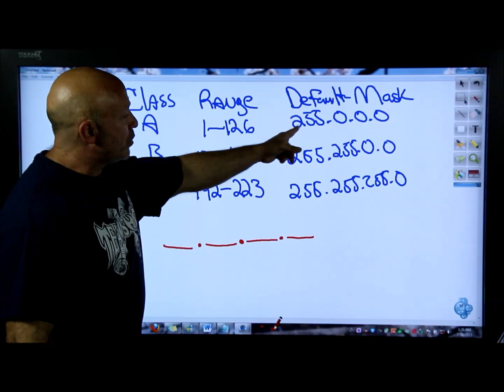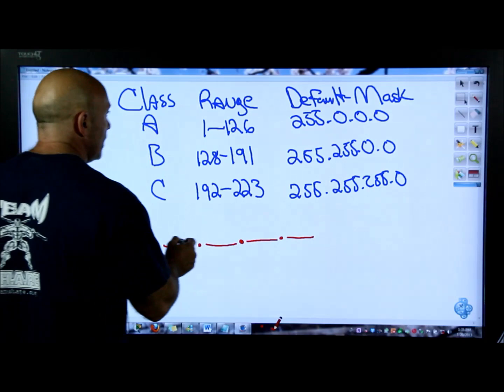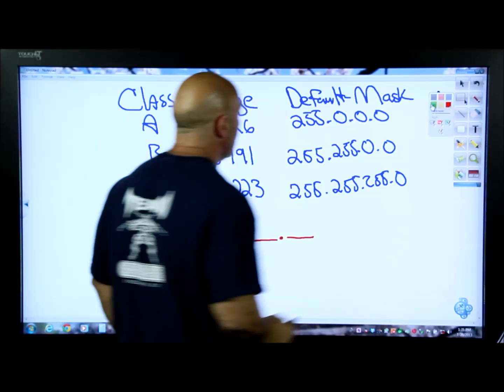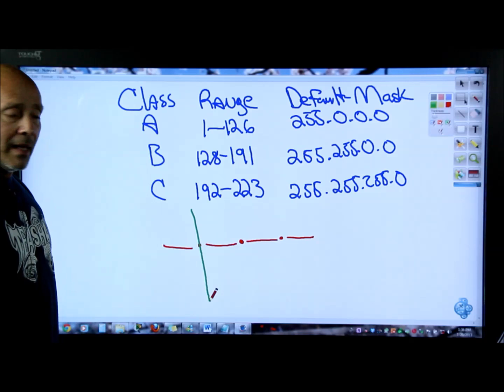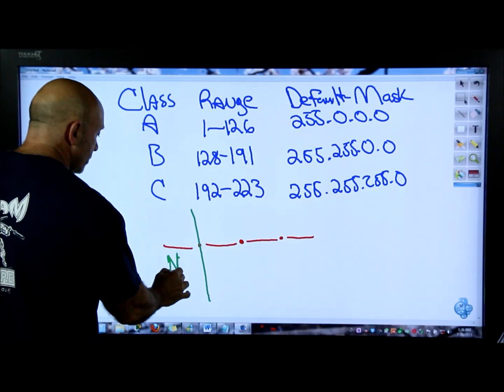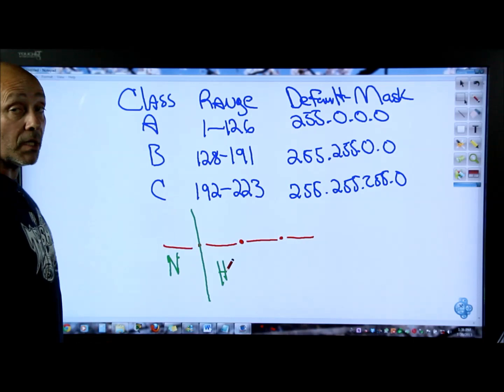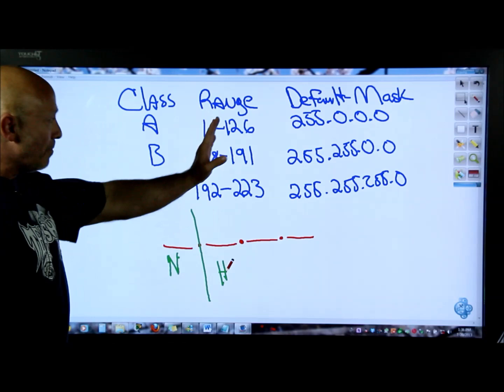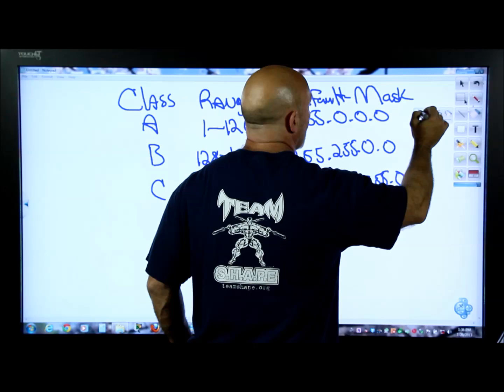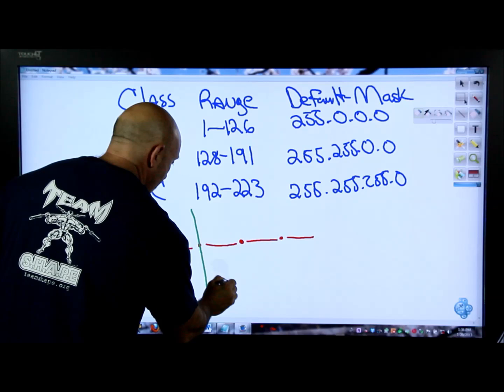With 255.0.0.0 as the default mask for Class A, there's an imaginary line after the first octet. That means the first octet is the network portion, and the last three octets are the host portion. The 255 is masking that first octet - saying you can't touch it, it's completely full, leave it alone. You can only work with the last three octets.